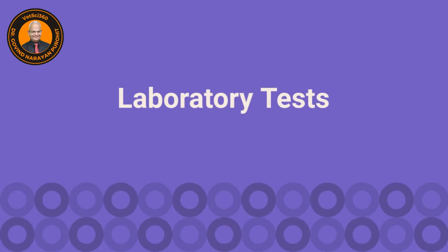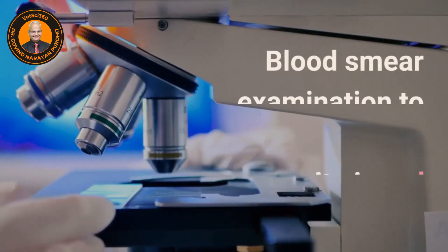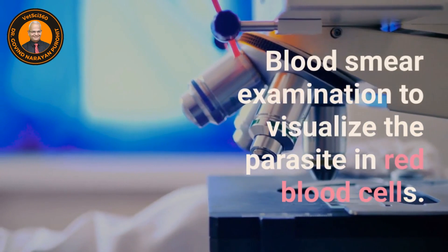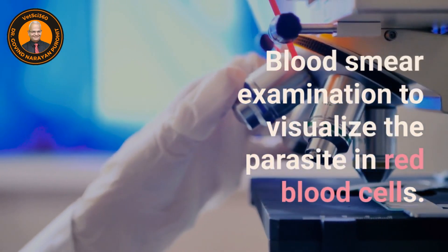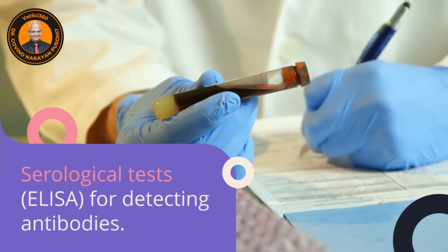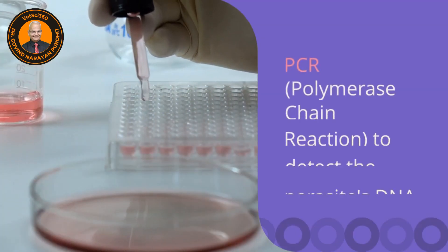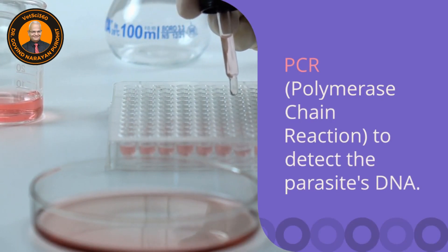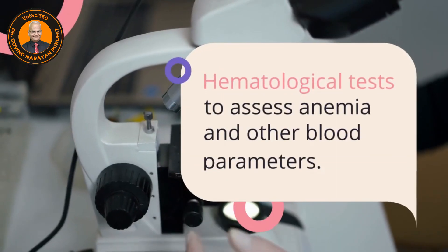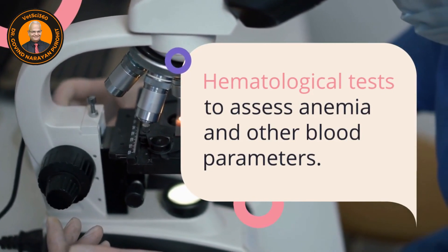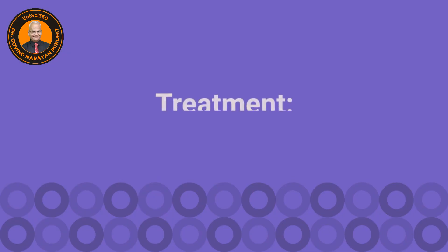Regarding laboratory tests, blood smear examination to visualize the parasite in the red blood cells is confirmatory that the animal is infected with Babesia. Serological tests for detecting antibodies can be helpful. PCR to detect the parasite's DNA can also aid in differential diagnosis, and hematological tests to assess anemia and other blood parameters are useful in diagnosis.